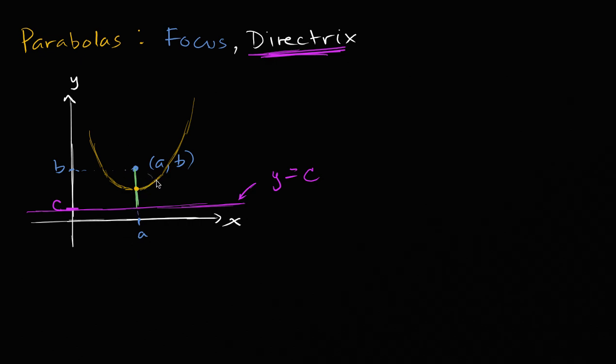And now if we take this point on the parabola, this distance needs to be the same as that distance. Well, that seems believable. If you take this point on the parabola, this distance needs to be the same as this distance.